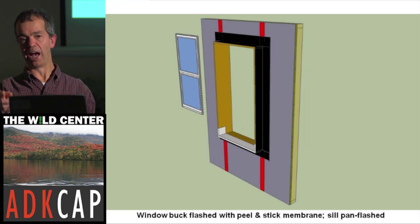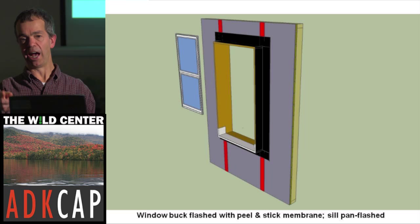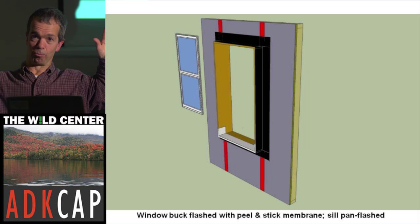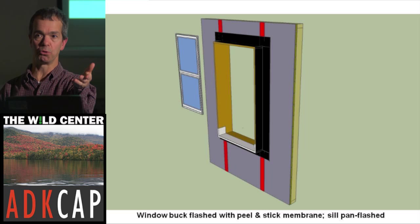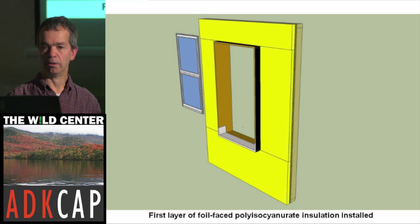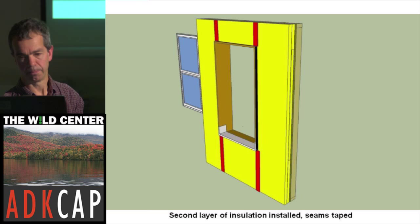Here they're flashing and taping. They used peel-and-stick and flashed the pan, sloped the pan. Basically they're treating this renovated house exactly as you would a new house. This is exactly how you should build your window jams and set your windows in new construction. First layer of rigid poly-ISO, taped. Second layer and the window back in. And we've put the strapping on.